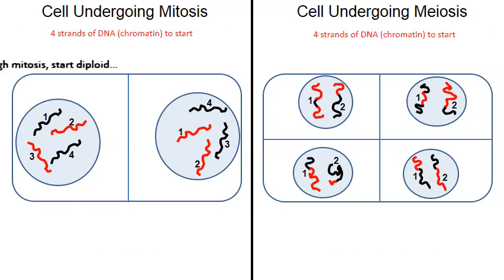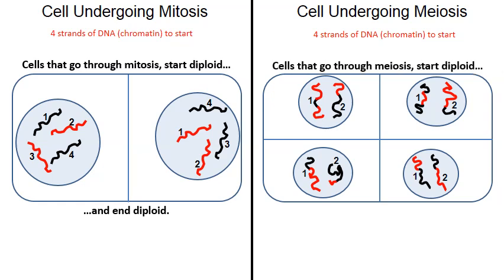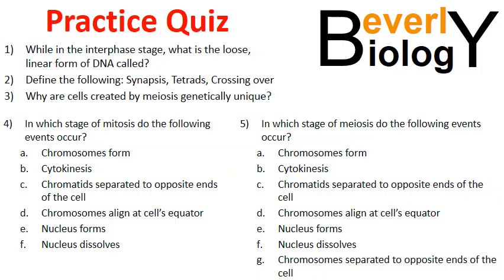To wrap up: the cells on the left created by mitosis start diploid and end diploid. The cells that undergo meiosis on the right started diploid but ended haploid. Here's a little practice quiz — pause the video and try to answer the questions. If you're in my biology class, bring your answers on a separate sheet of paper. I hope you found the video helpful, please comment below, and thanks for watching.